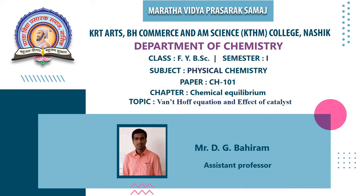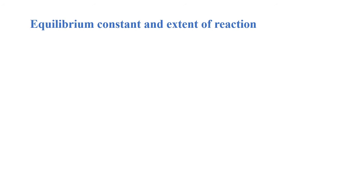Hello everyone, I am DG Bairam. Welcome back in this lecture. In the last lecture we have seen the relation between delta G and delta G naught, and the response of equilibria to conditions and problems. So in this lecture we are going to see the equilibrium constant and extent of reaction, and also the effect of catalyst. So let's start with the first topic: equilibrium constant and extent of reaction.